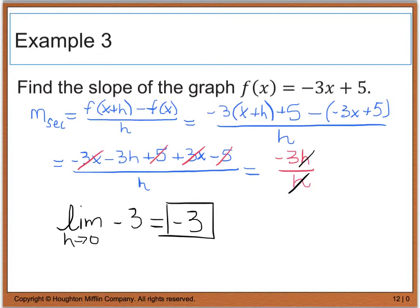The h's cancel, and taking the limit as h approaches 0 of -3 gives us -3. Let's double-check: the original function -3x + 5 is a linear function with a slope of -3, which is exactly what we just calculated using the difference quotient.